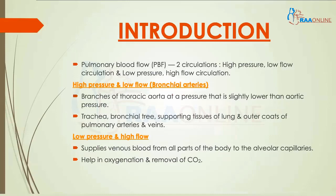The pulmonary blood flow consists of two circulations. One is the high pressure, low flow circulation, and the second is the low pressure, high flow circulation. In the high pressure and low flow circulation, we have the bronchial arteries, which are branches of the thoracic aorta and flow at a pressure slightly lower than aortic pressure — that is why they are called high pressure. They supply the trachea, the bronchial tree, the supporting tissues of the lung, and the outer coats of the pulmonary arteries and veins. They don't provide much pulmonary blood flow, but they provide high pressure — that is why they are called high pressure and low flow.